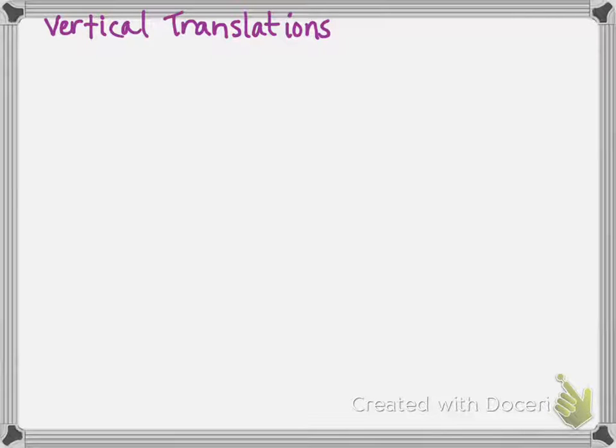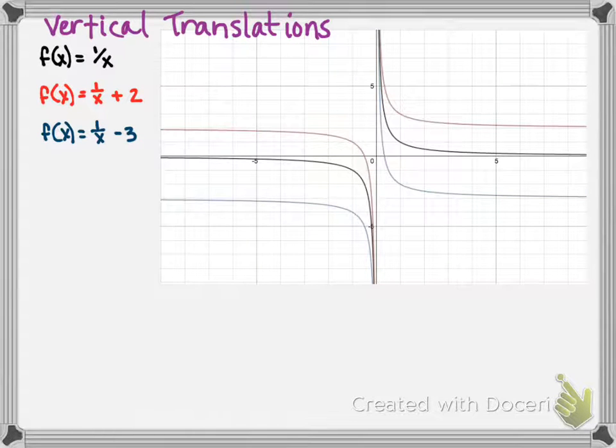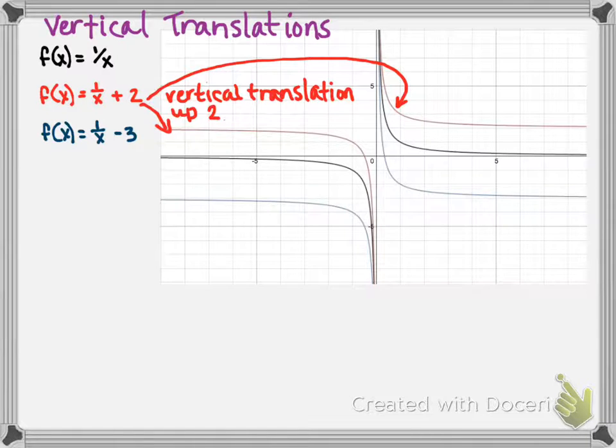Vertical translations. We've got our baseline, then f of x equals 1 over x plus 2. Notice the plus 2 is not part of the fraction. And f of x equals 1 over x minus 3. Again, the minus 3 is not part of the fraction. Here are our three graphs for comparison. The black one is our parent function, and then 1 over x plus 2 is the function in red. This is a vertical translation up 2.